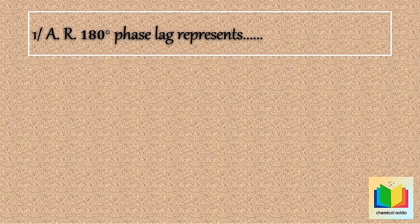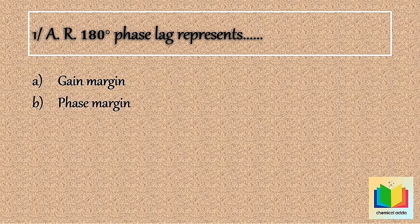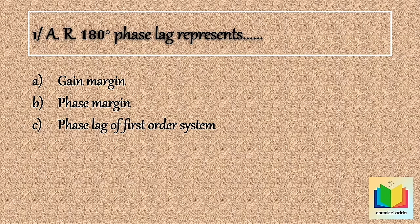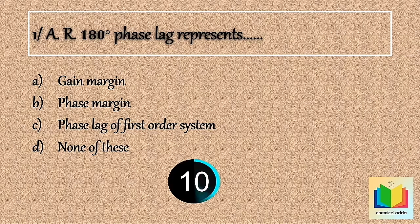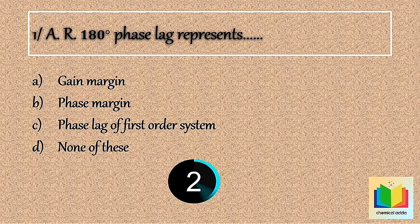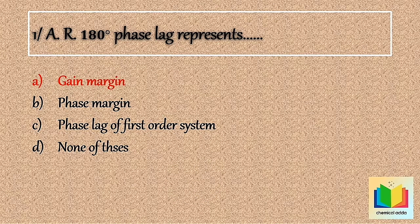Now next question — 1 divided by AR at 180 degrees phase lag represents: Option A) gain margin, Option B) phase margin, Option C) phase lag of first order system, Option D) none of these. Your time starts now. 10, 9, 8, 7, 6, 5, 4, 3, 2, 1. Stop. Answer is option A: gain margin.